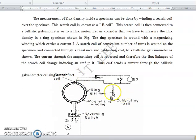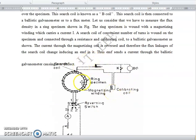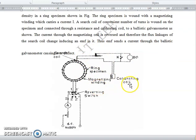This is the ring specimen. We are going to measure the flux density, which consists of calibrating coil, magnetizing winding, ring specimen and search coil, as well as reversing switch, DC supply, etc.